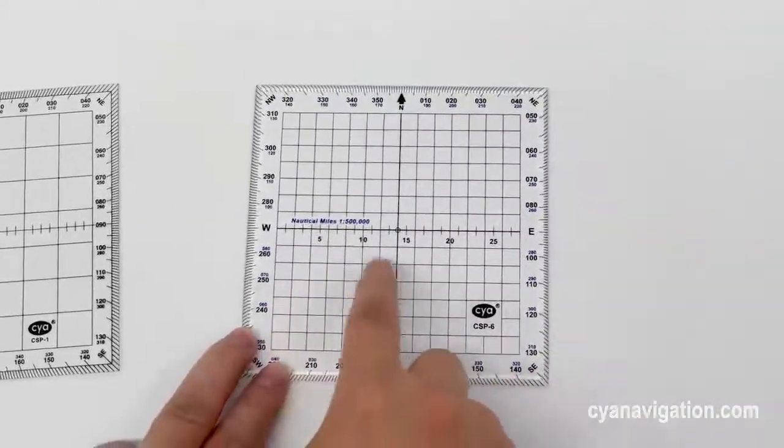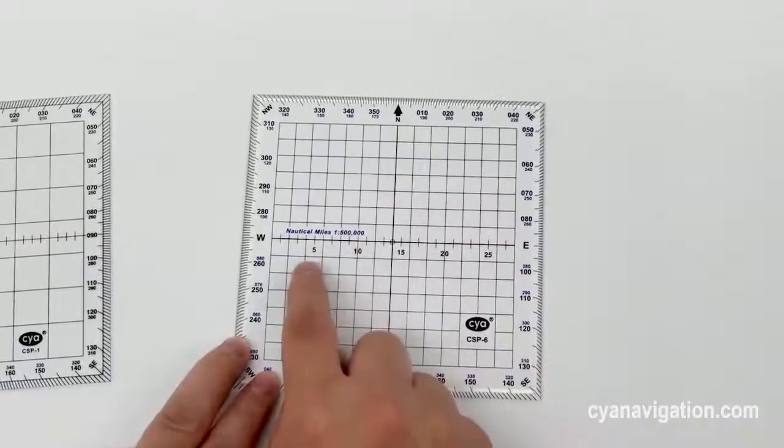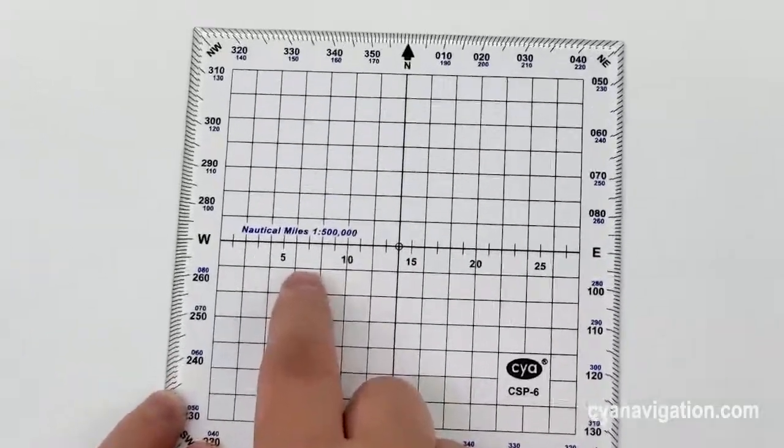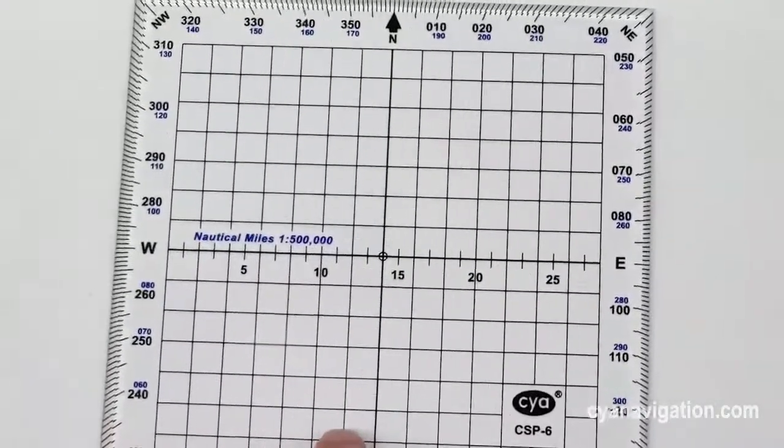Its central grid shows 1:500,000 nautical mile scale, which is helpful for your flight planning.